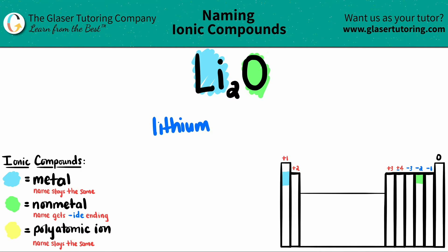Now for the oxygen, which is the O, the non-metal always gets the "-ide" ending. So instead of saying lithium oxygen, we have to turn oxygen into oxide — it needs to have the "-ide" ending.